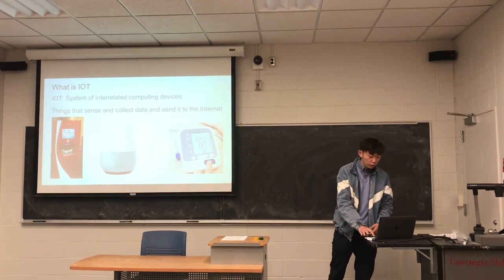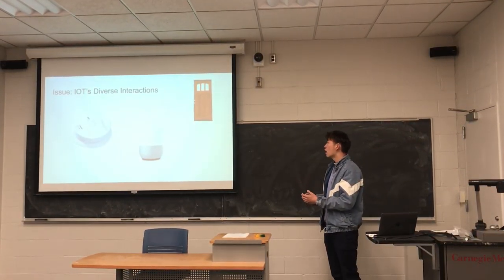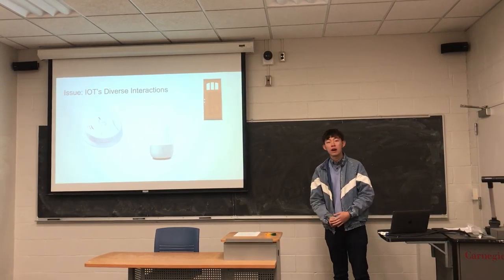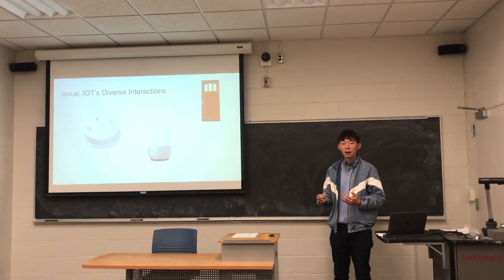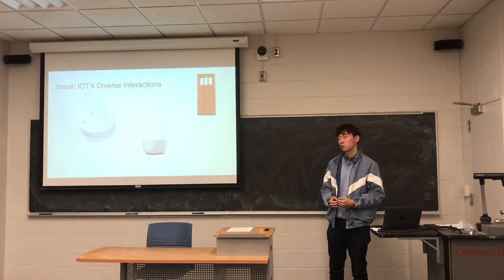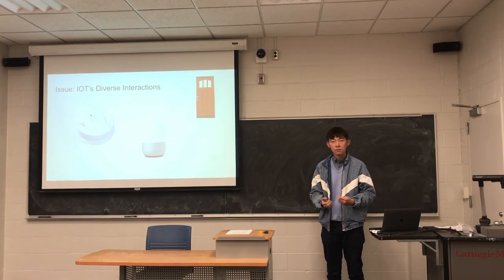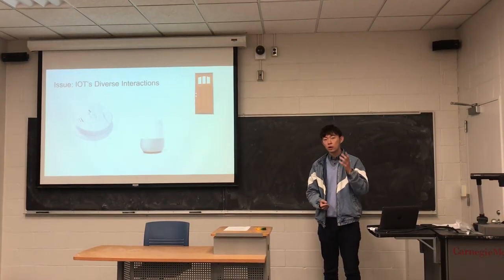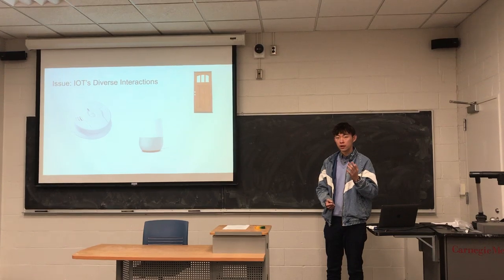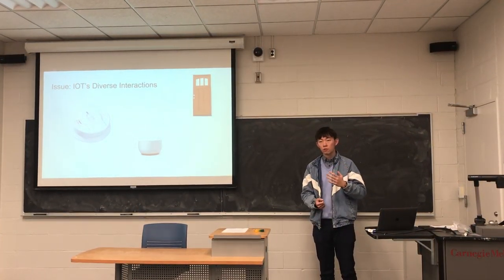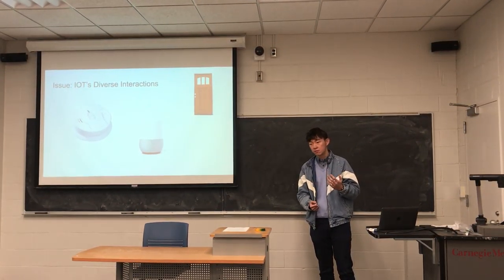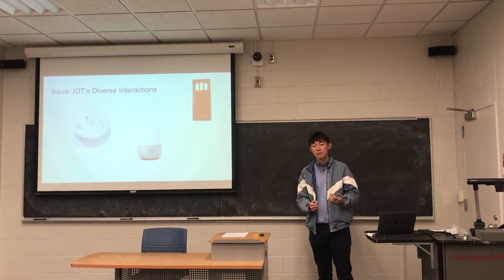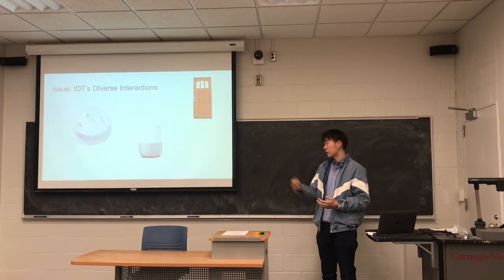I want to focus on one issue: IoT's diversity of interactions. For example, if you have a complicated system in a house, you may have a smoke detector and a smart door that closes when a person leaves, opens when a person arrives, or when some emergency happens, such as when the smoke detector rings so the person can evacuate.